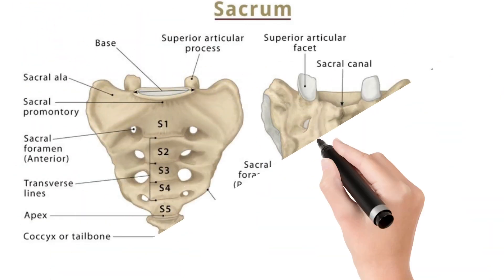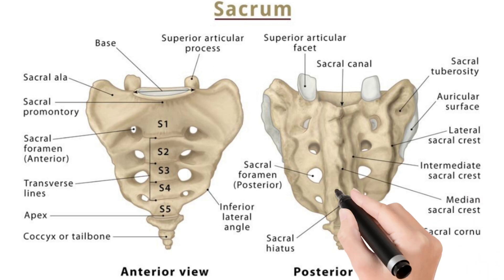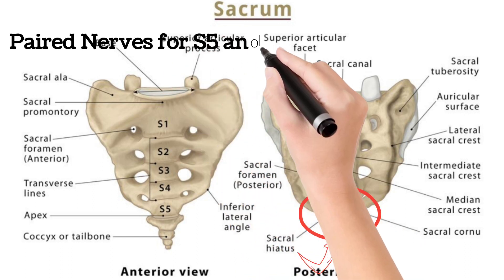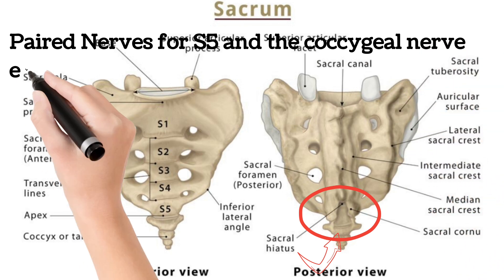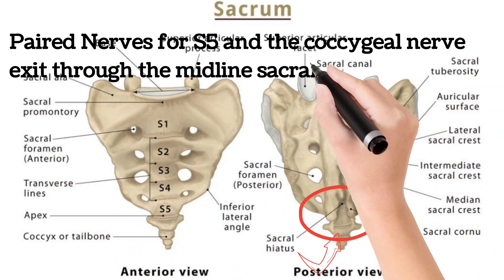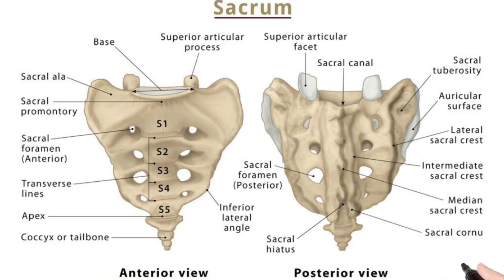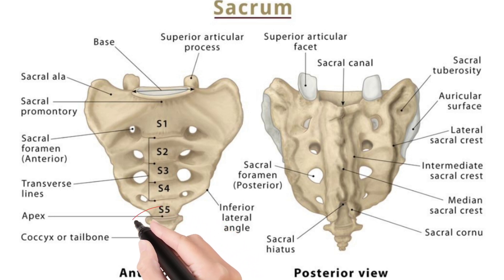The question arises: where is S5? Now look at this area — this is the sacral hiatus, a very important structure from the anesthesia point of view. Through this sacral hiatus, the paired nerves for S5 and the coccygeal nerve exit through this midline sacral hiatus. So S1 to S4 exit from the sacral foramina, and S5 and the coccygeal nerve exit from the sacral hiatus.